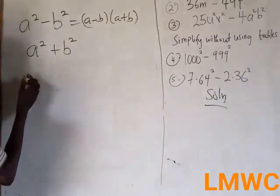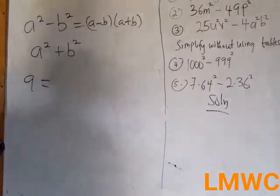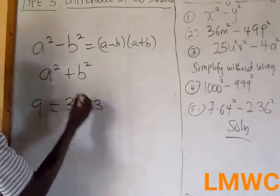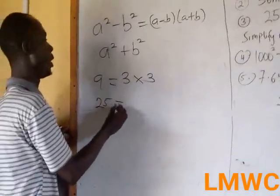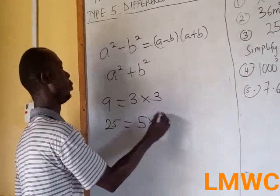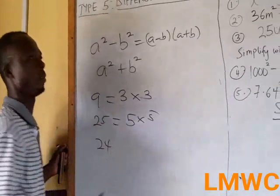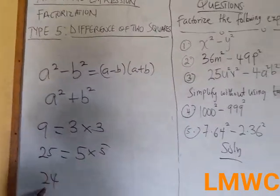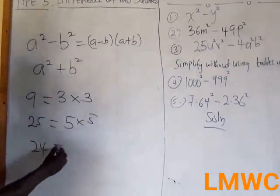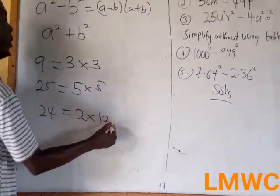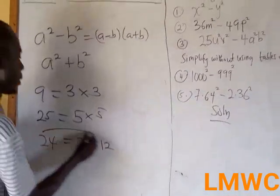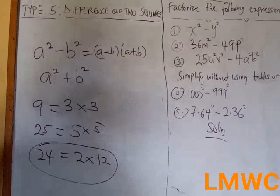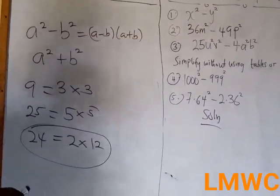A perfect square is when two same numbers multiply to give a result. For example, 9 is a perfect square because 3 times 3 equals 9. Similarly, 25 is a perfect square because 5 times 5 equals 25. But 24 is not a perfect square because we don't have two same numbers that multiply to give 24.